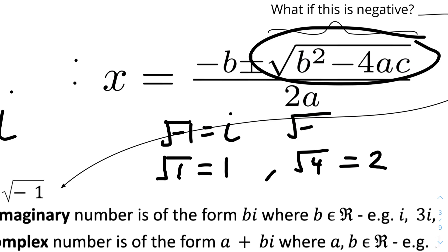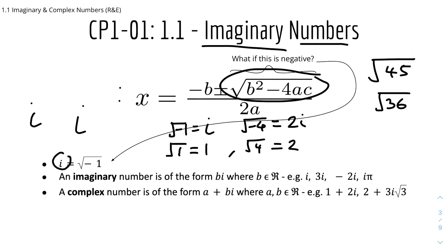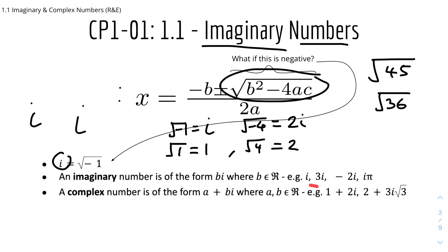The square root of negative 4 will be equal to 2i, which we'll look into later. Basically, an imaginary number is of the form bi, where b is a real number — like 2, 4, or negative 3. For example: i, 3i, minus 2i, or πi. And a complex number is of the form a plus bi, where a and b are both real numbers. For example: 1 plus 2i, or 2 plus 3i root 3.